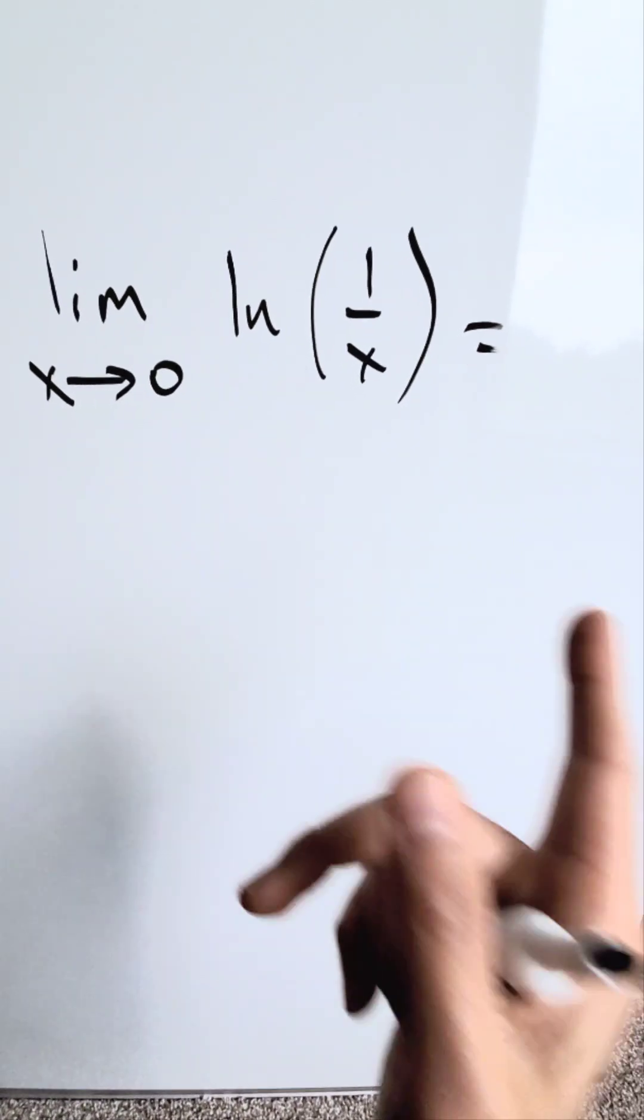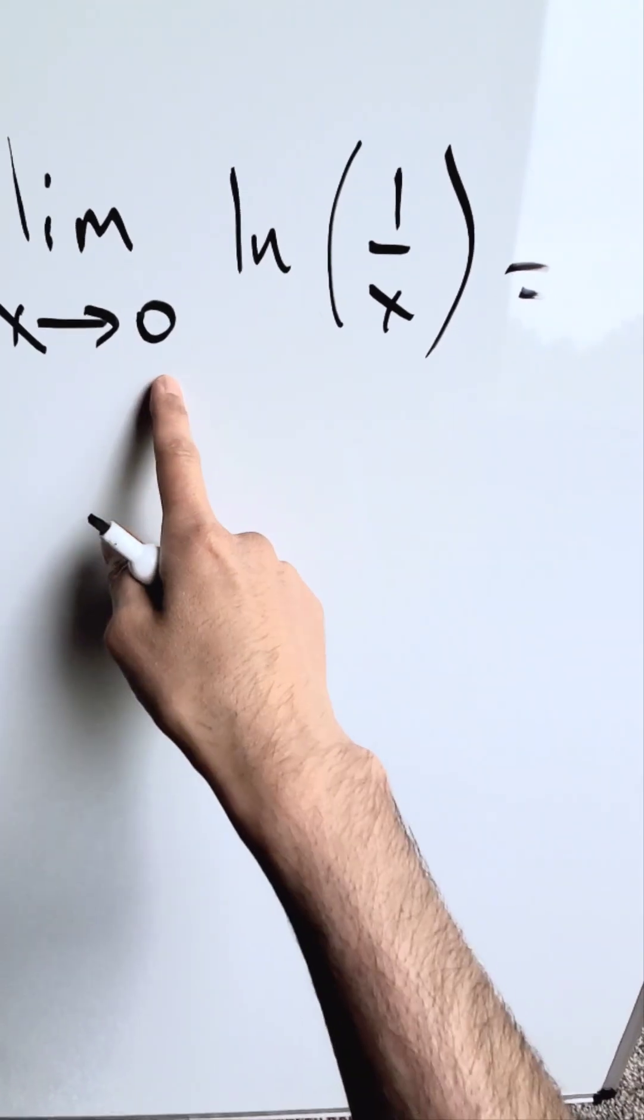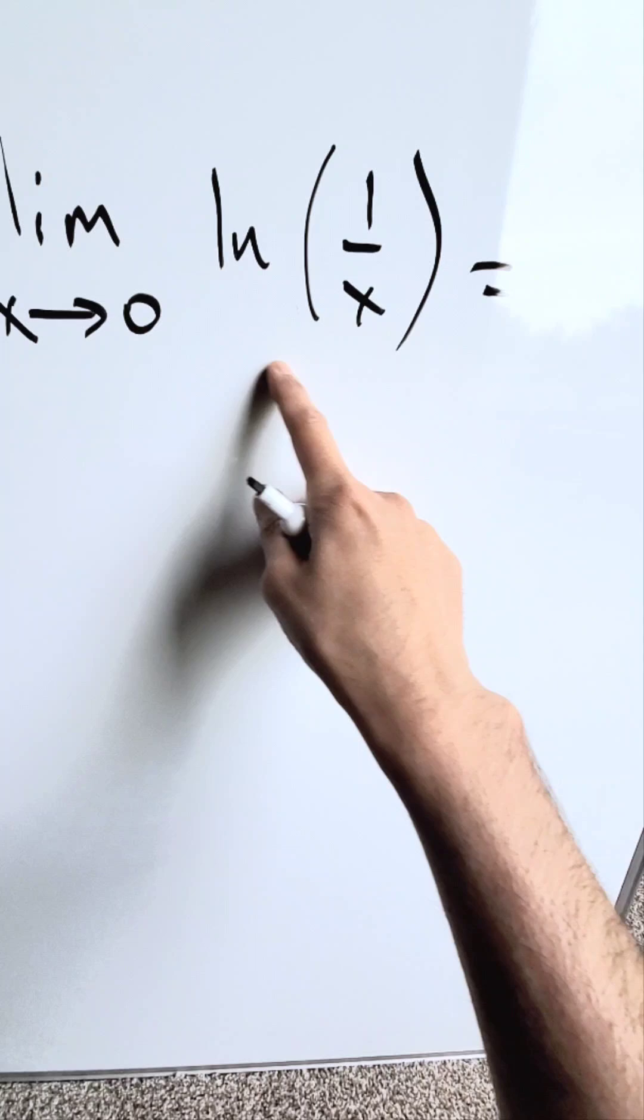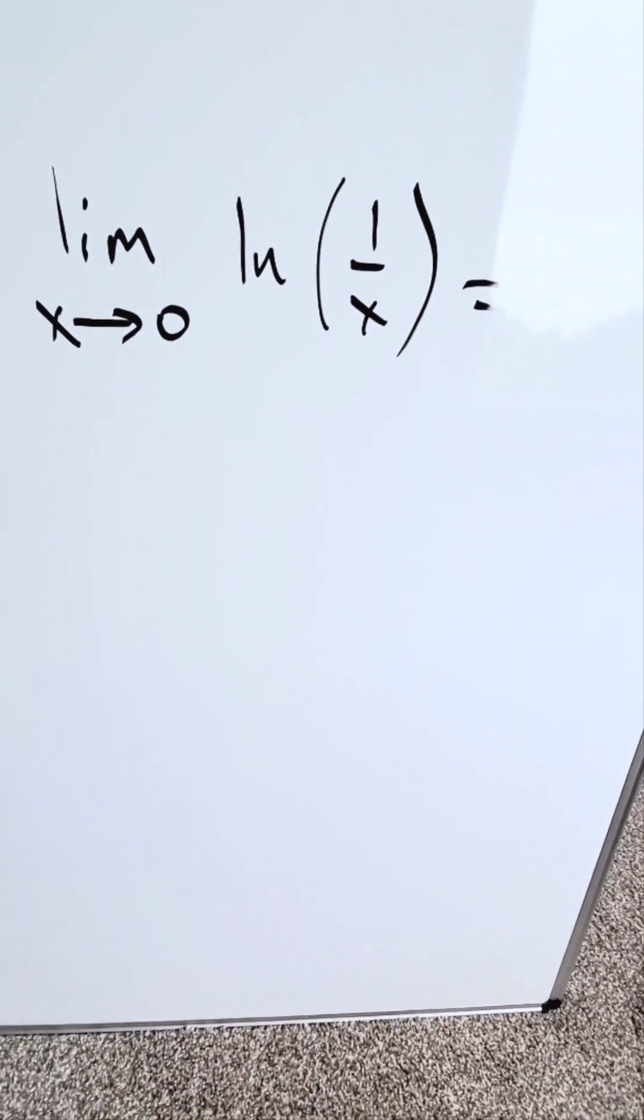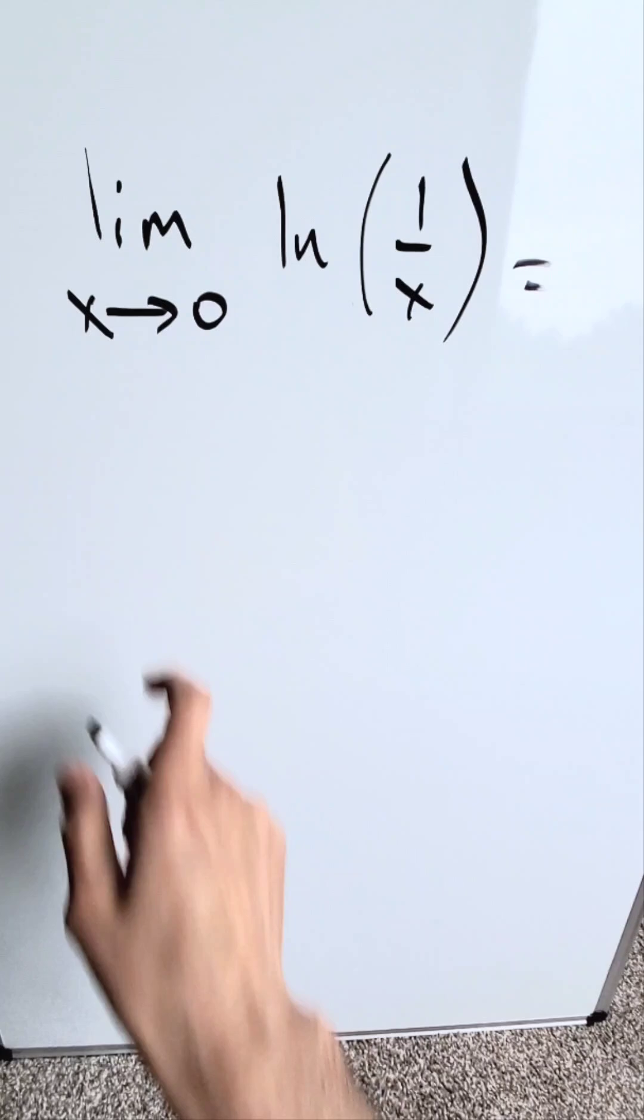We are looking at this limit question: limit as x approaches 0 of natural log of 1 over x. This function is similar to what we've seen recently, but we're evaluating at 0, which is a different area of evaluation.